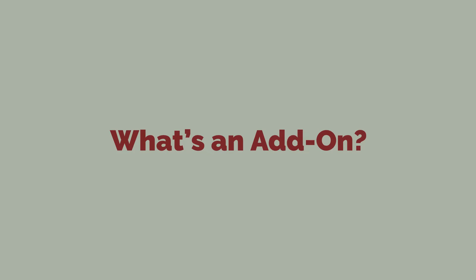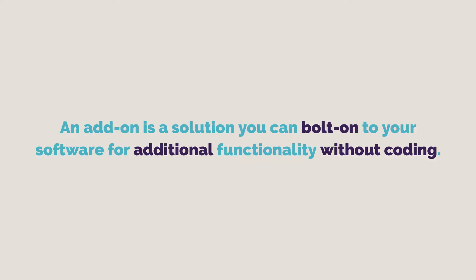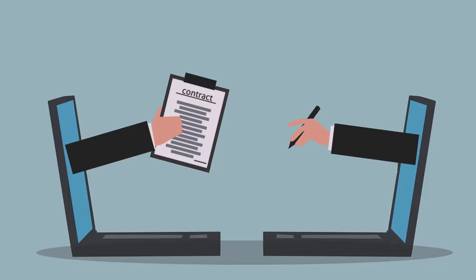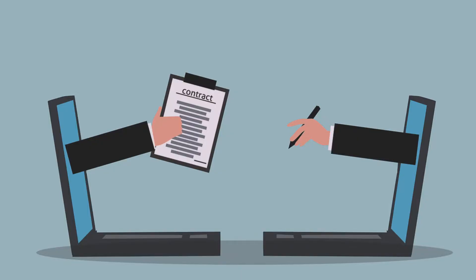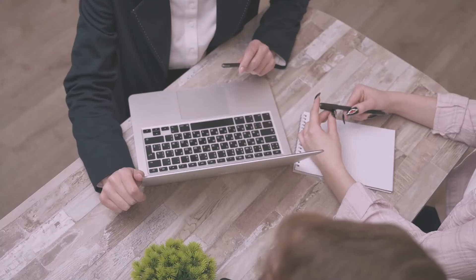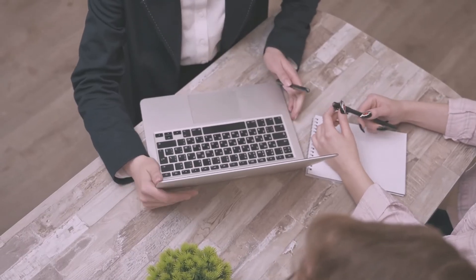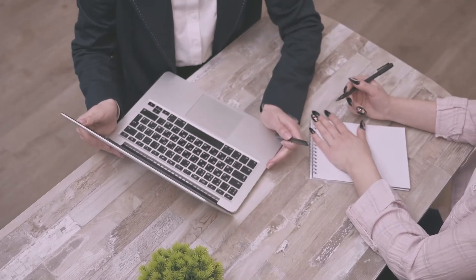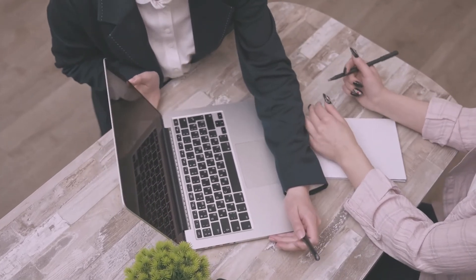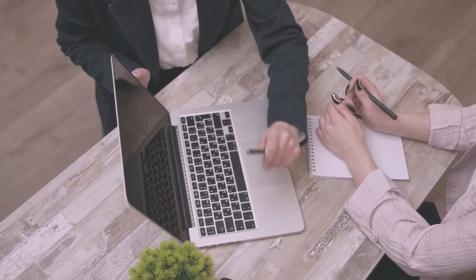What's an add-on? An add-on is a solution you can bolt onto your software for additional functionality without coding. Most add-on products can be purchased through a software marketplace, which acts as a virtual store. An example of an add-on may be a compatible e-signature app for a CRM. The downside of add-ons is that their capabilities will be limited to what's built into them, so they won't always meet your exact specifications.